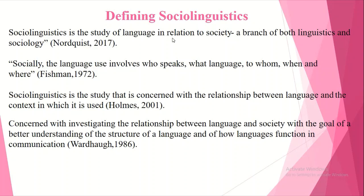Let's look at some definitions of sociolinguistics. First, it is the study of language in relation to society, or a branch of both linguistics and sociology. Second, sociolinguistics involves who speaks what language to whom, when, and where. Third, it is the study concerned with the relationship between language and the context in which it is used. Finally, sociolinguistics investigates the relationship between language and society with the goal of better understanding the structure of language and how language functions in communication.